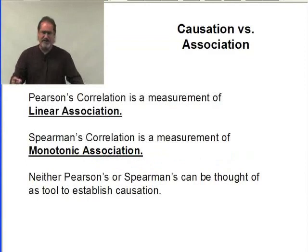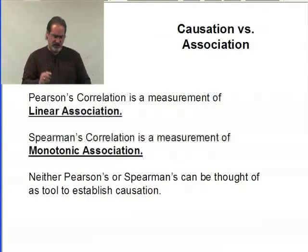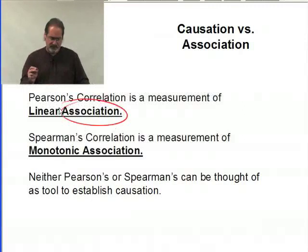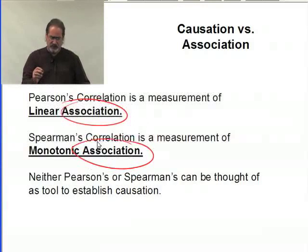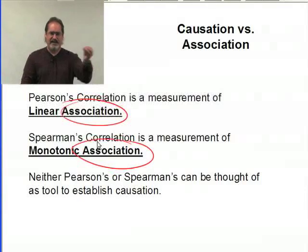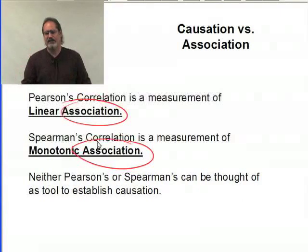Pearson's correlation is a measurement of linear association, and it's that association that we really need to key on. Spearman's correlation is a measurement of monotonic association. Neither Pearson's nor Spearman's can be thought of as establishing causation. If you're going to establish causation, then you're saying A causes B — when A changes, it causes B to change — and in reality that's extremely difficult to do.